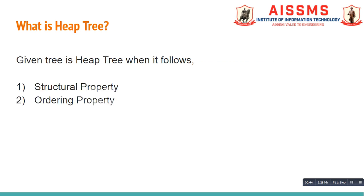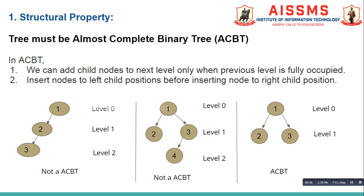Now let us see what is a heap tree. We can say a given tree is a heap tree when it follows structural property and ordering property. The structural property gets satisfied when the given tree is an ACBT, meaning an almost complete binary tree.